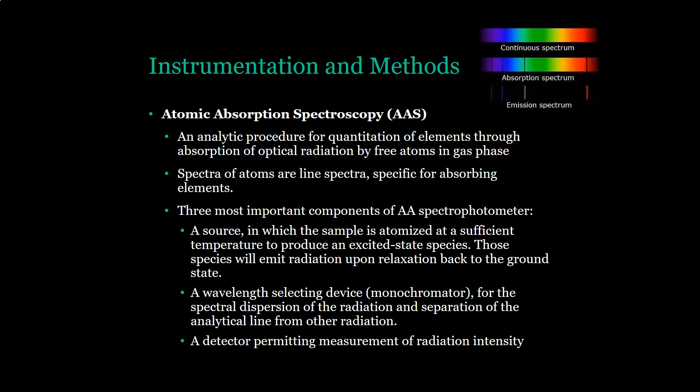The three most important components of the AA spectrophotometer are again: the source, in which the sample is atomized at sufficient temperature to produce an excited-state species, and those species emit radiation upon relaxation back to the ground state; a wavelength-selecting device, also known as a monochromator, for spectral dispersion and separation of the analytical line; and a detector that permits measurement of radiation intensity. AAS and AES are very similar.